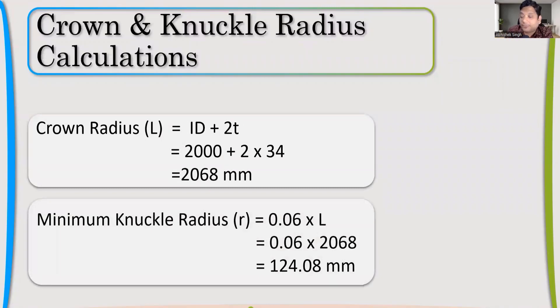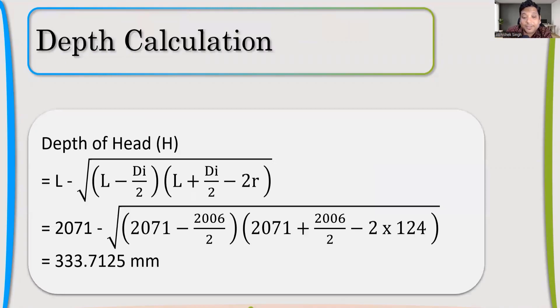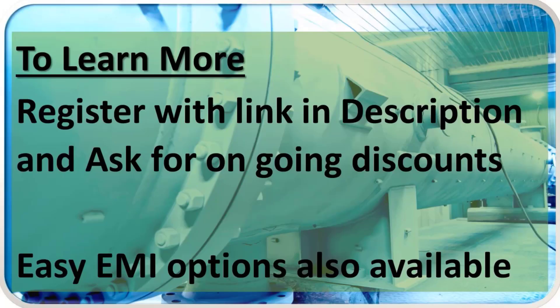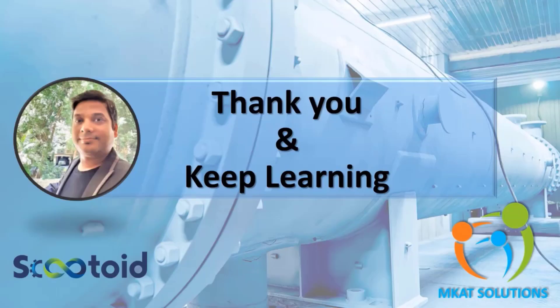Crown radius. Now we can find all these radiuses also because earlier it was in form of T. Now we have the T value, so we can calculate the crown radius, we can calculate the knuckle radius, depth of head. All these calculations we can do. For in-depth training and to learn more about these courses, register with the link in the description. See you guys in the next video. Bye bye.